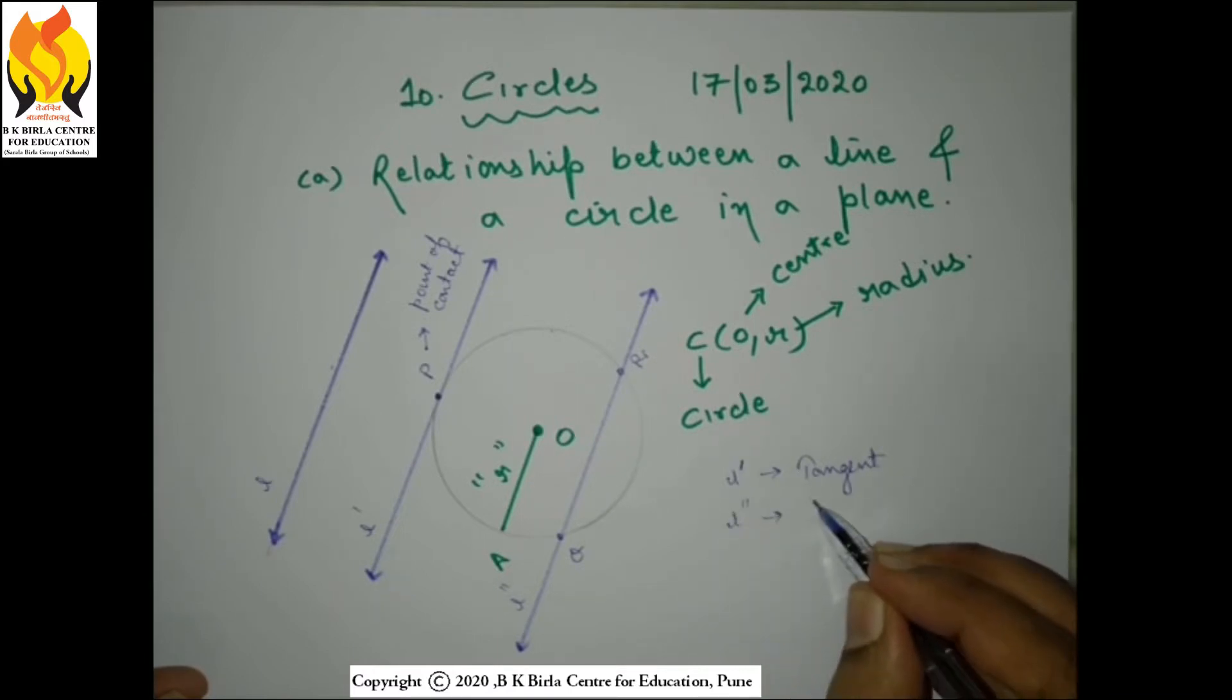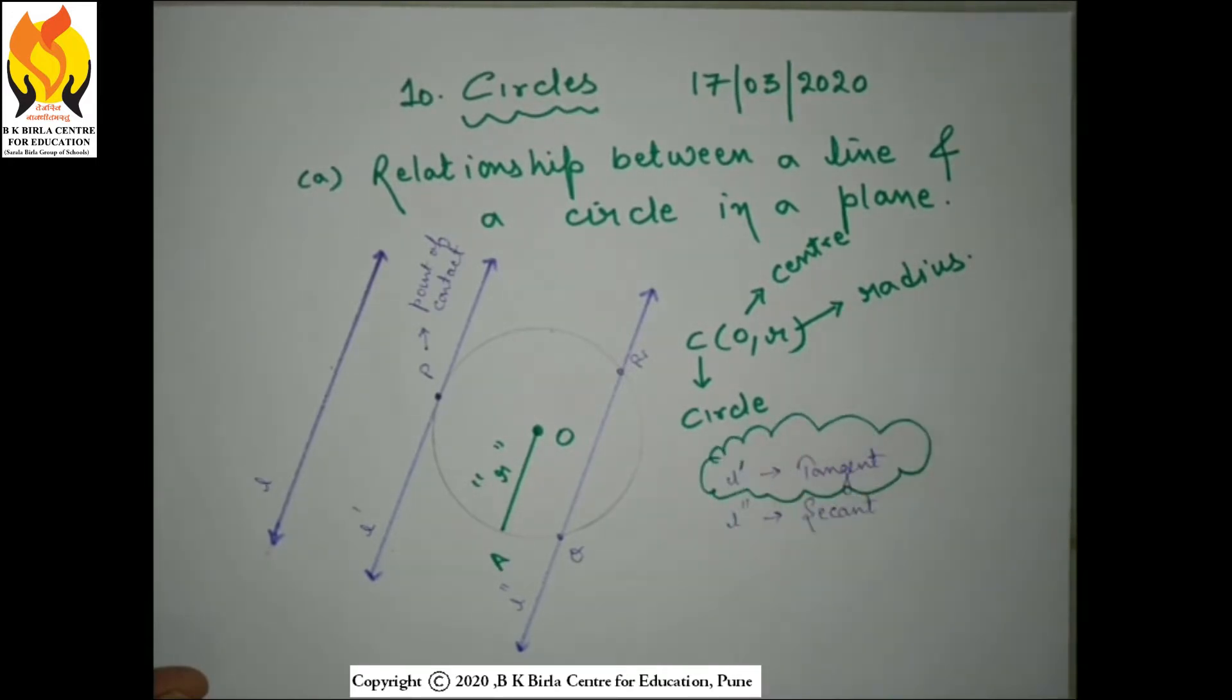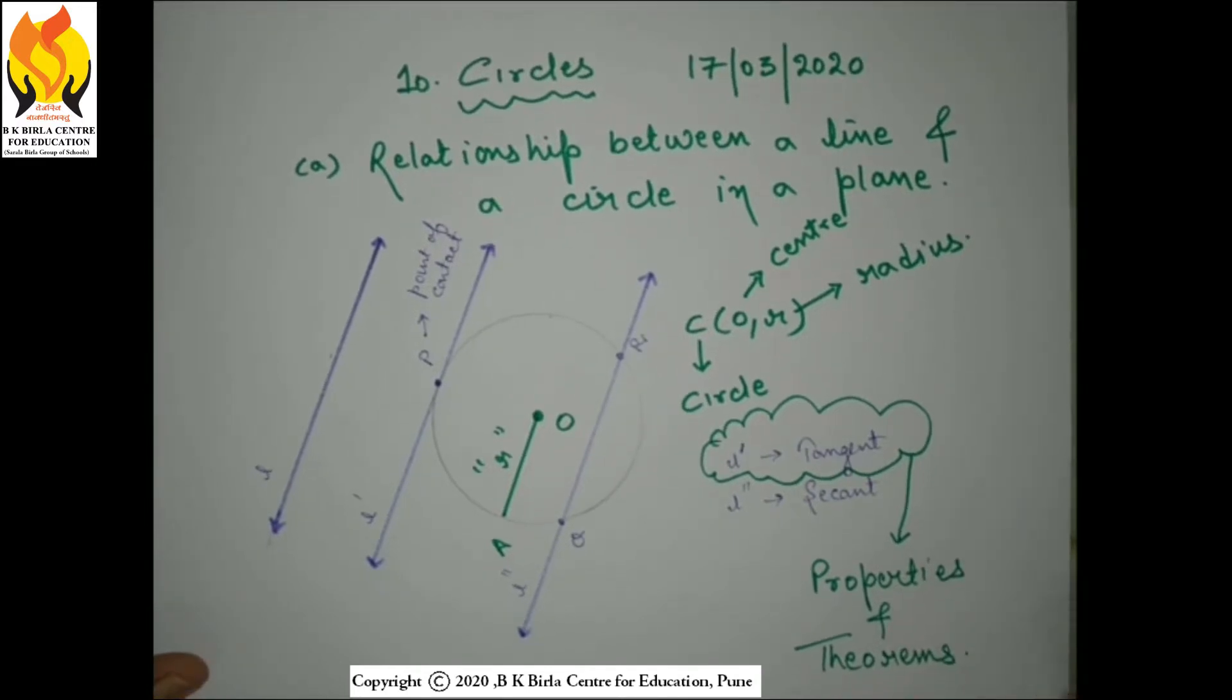Whereas the line which intersects the circle at two points is known as secant. In class 10th, our main focus will be on the tangent, its properties, and theorems which underline the relationship between circle and the line.